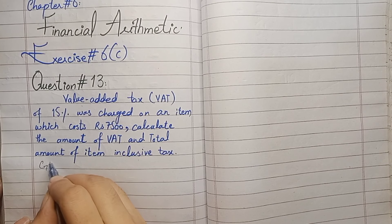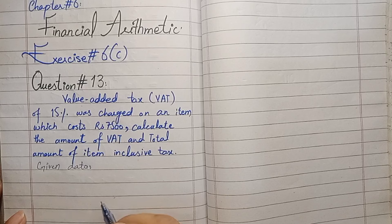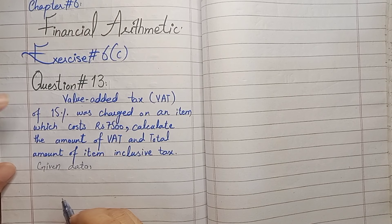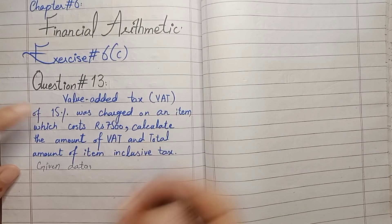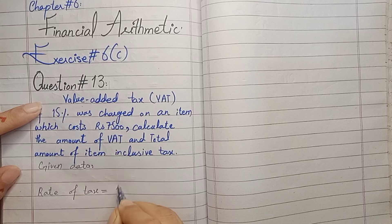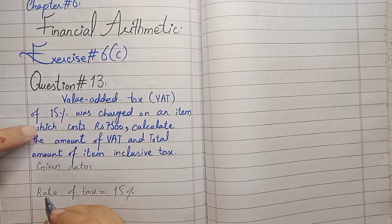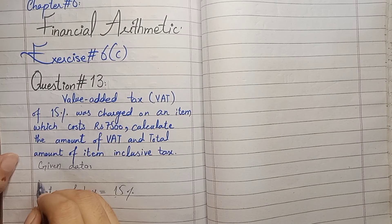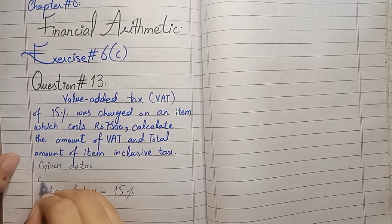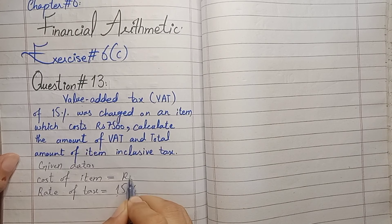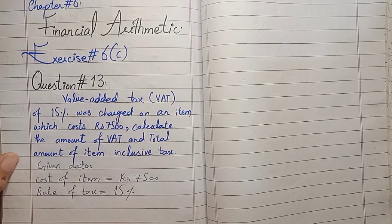First of all, we have to write the given data. In the given data, we have rate of VAT, rate of tax, 15%. And you have to write cost of product, cost of item, Rs. 7,500.